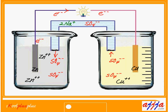The left-hand side keeps losing electrons — that's oxidation, which is the anode, and it's negative. The right-hand side gains electrons, which is reduction — reduction starts with R, a consonant, so we call it cathode, the positive side. Left-hand side: oxidation → anode → negative. Right-hand side: reduction → cathode → positive.